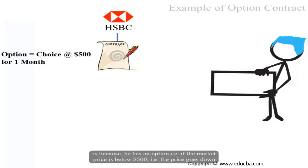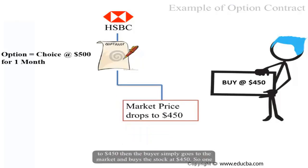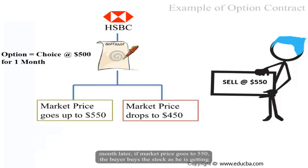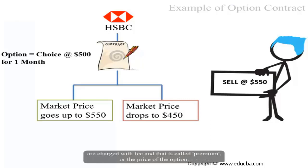The buyer has the choice to buy HSBC stock at $500 but is not forced to buy it, because he has an option. If the market price is below $500 — say it drops to $450 — the buyer simply goes to the market and buys the stock at $450. One month later, if the market price goes to $550, the buyer buys at $500 and makes a profit of $50 by selling at the market price. When you exercise this option, you are charged a fee called the premium, or the price of the option.